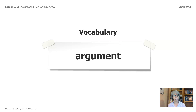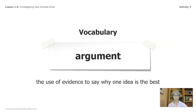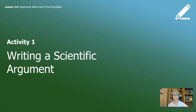Let's start with this word: argument. Remember, an argument in science is not a disagreement between two people, nor is it something that you need to get angry about. It is the use of evidence to say why one idea is the best.